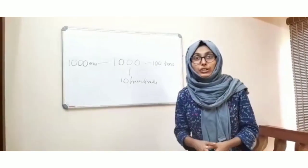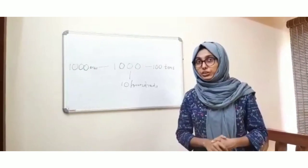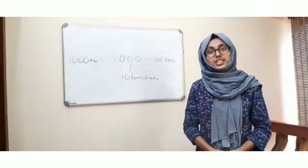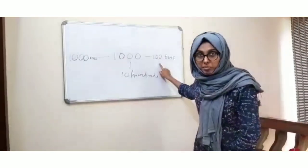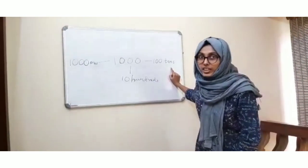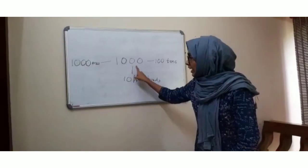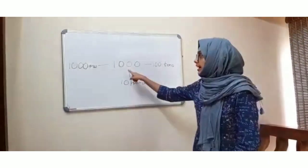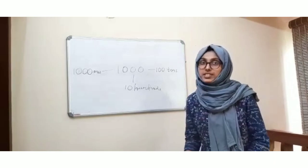Friends, you have studied in class 4th that you can write 1000 in different forms. They are: 1000 is 100 times 10s; 1000 is 10 times 100s; and 1000 is 1000 once. You have studied this.